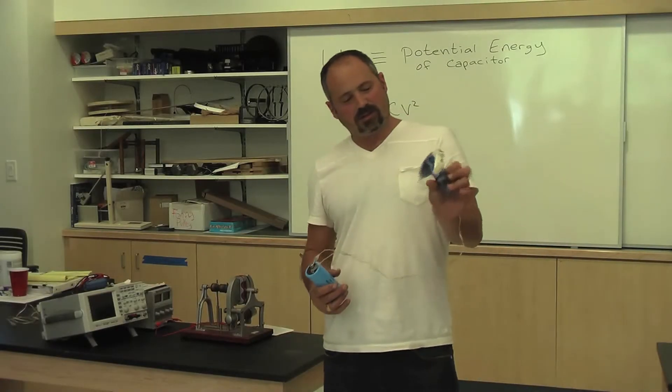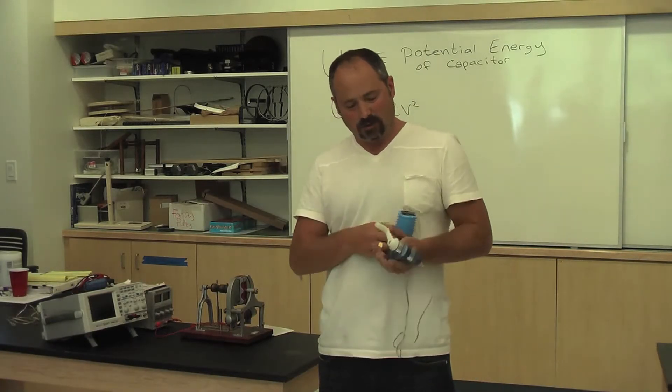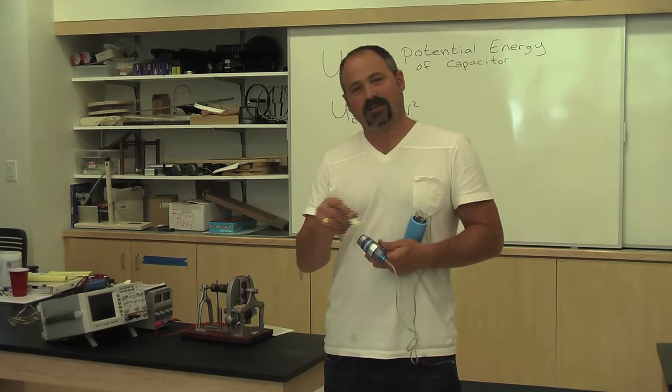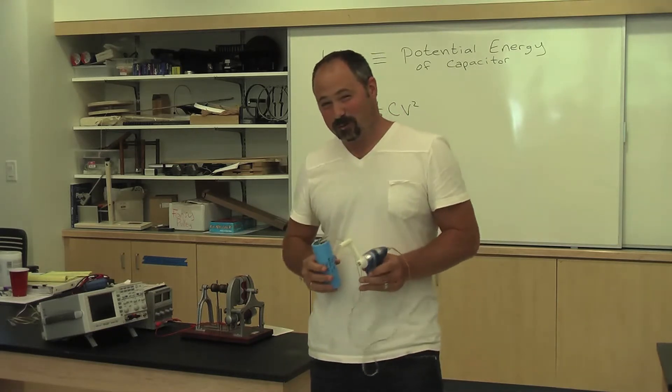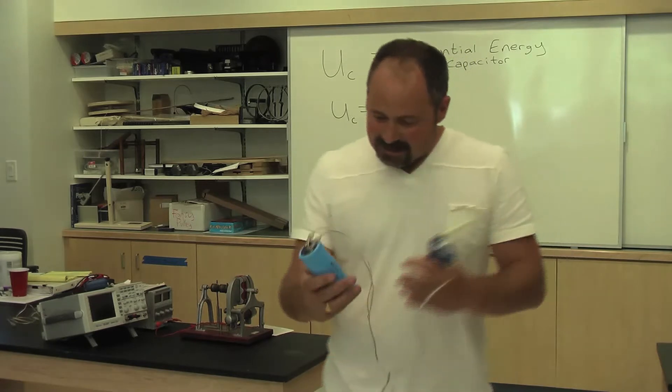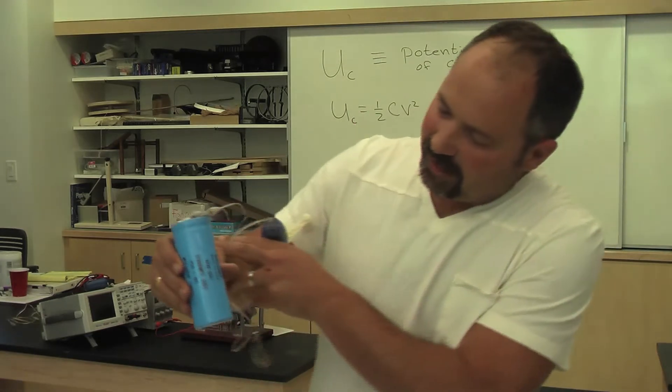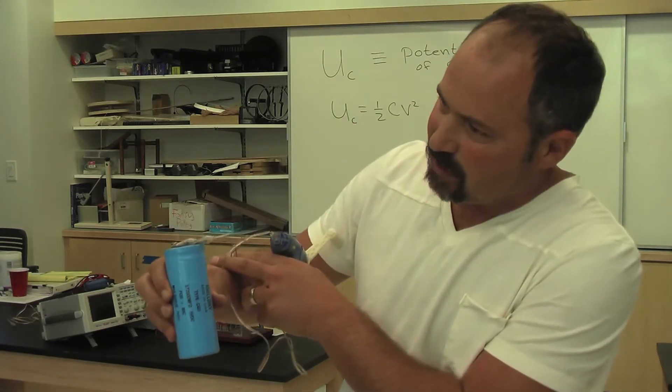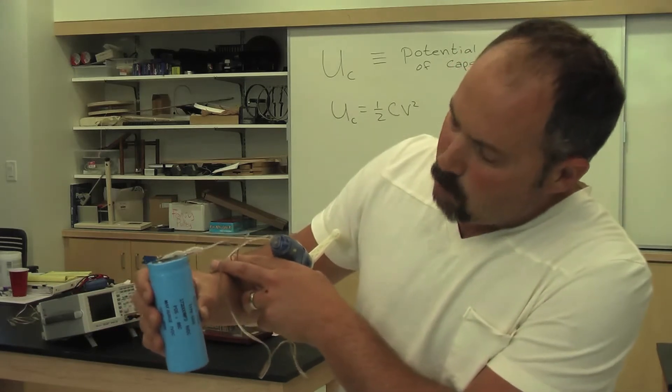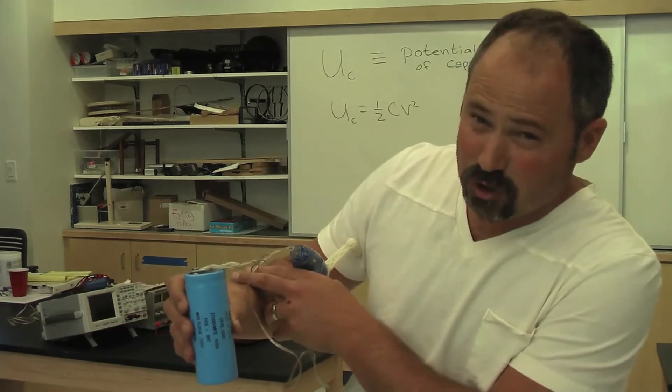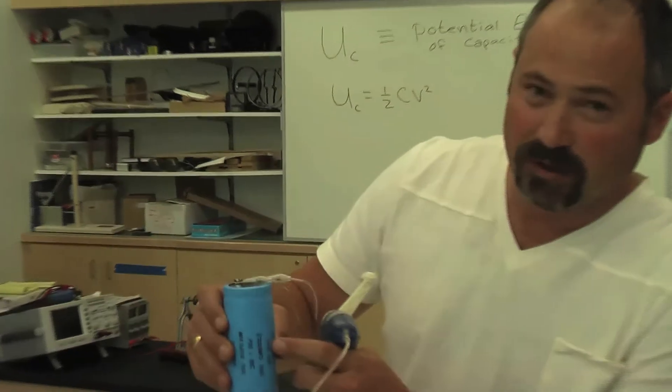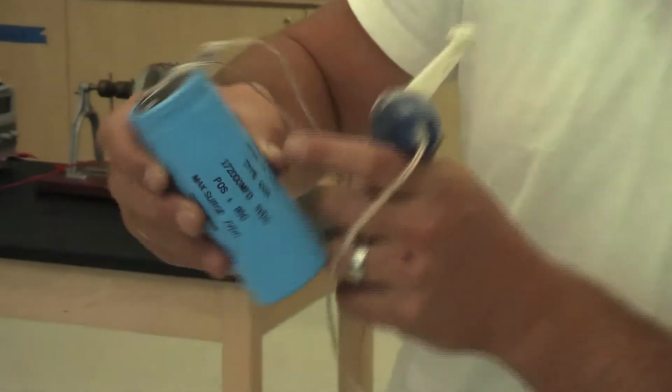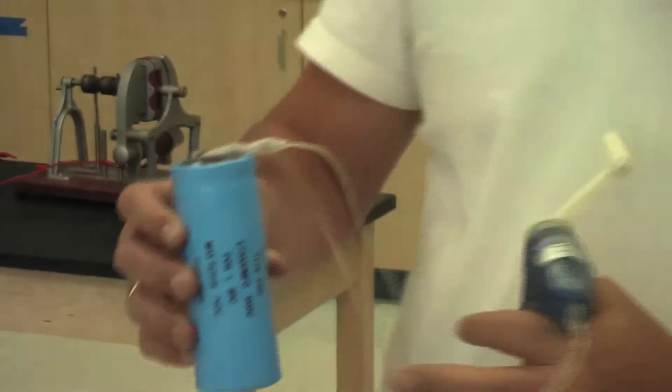I have here one of these cute little handheld generators. When I turn the crank, this thing generates electricity. See Nicole's video for proof. In this hand I have a capacitor. It's 5 volts and 0.172 farads. This is microfarads, so this would come out to 0.172 farad.